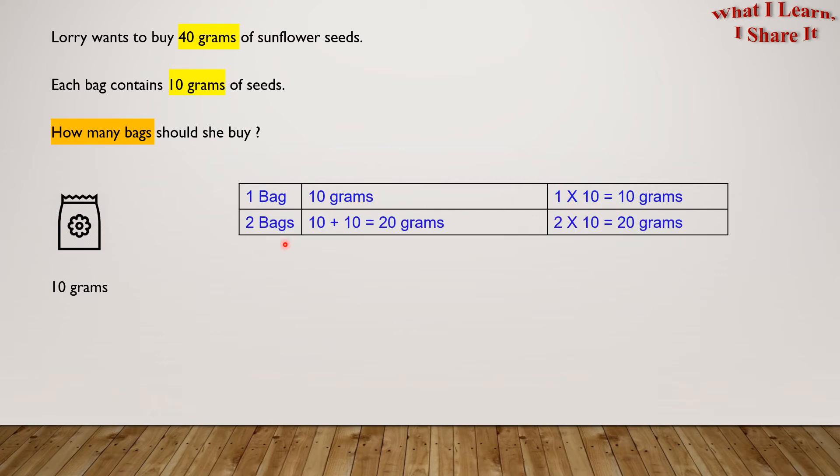Then 2 bags will equal 10 plus 10 equals 20 grams, which equals 2 times 10 equals 20 grams. But the two bags aren't enough.